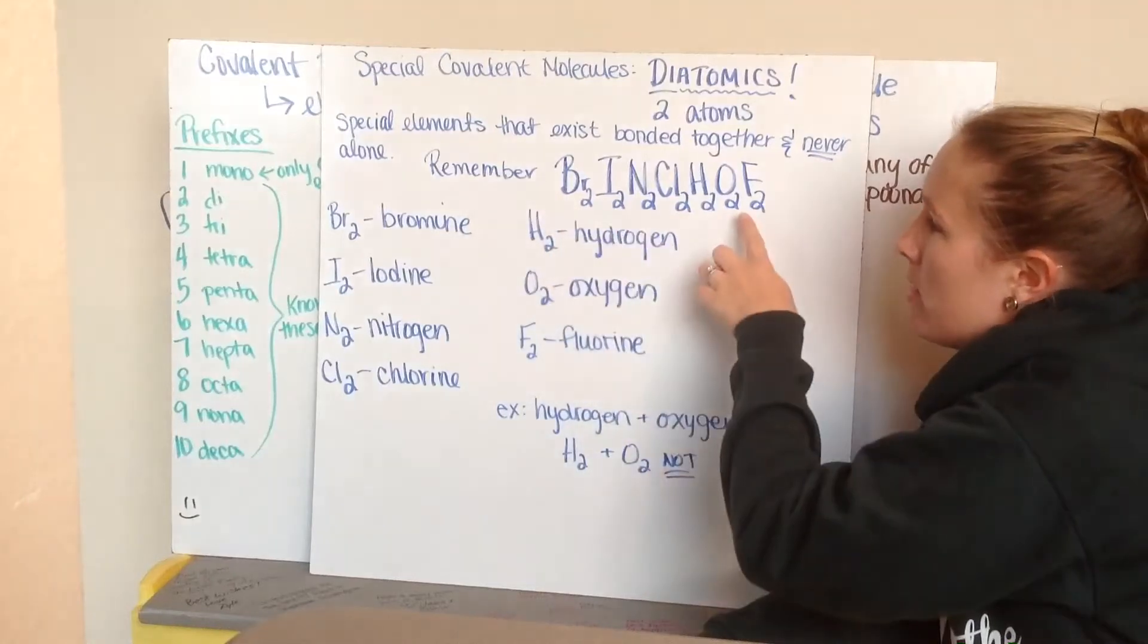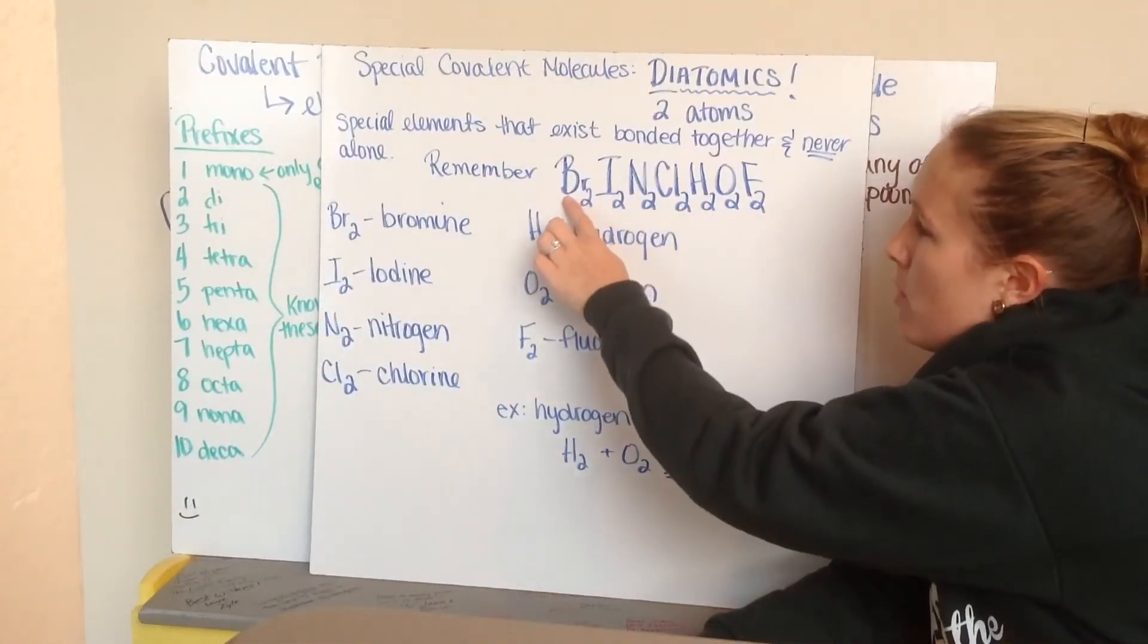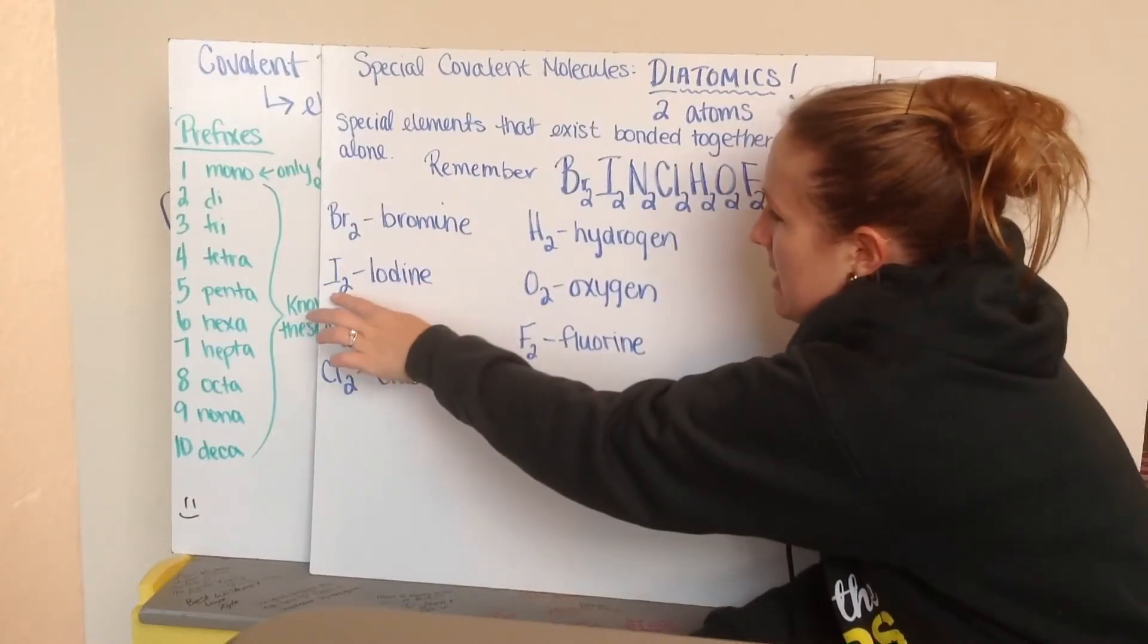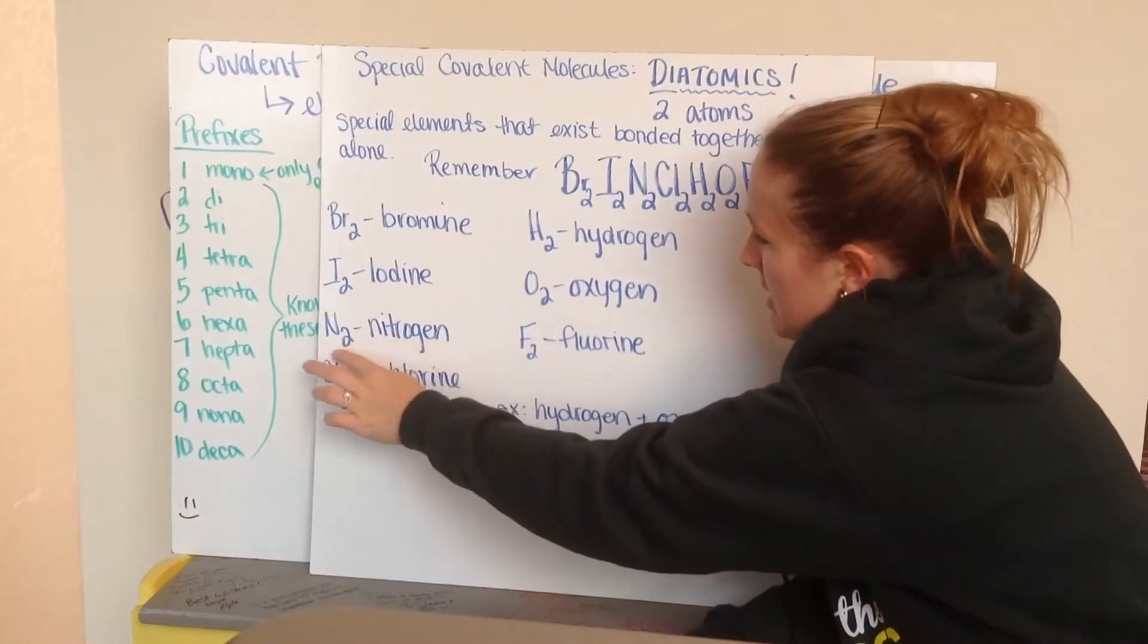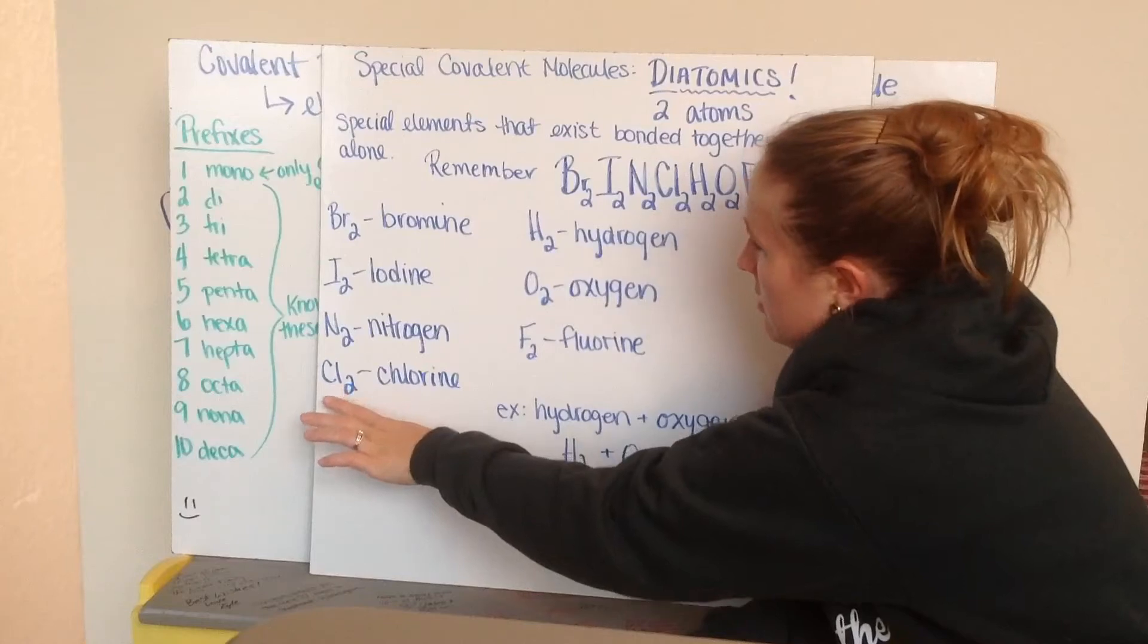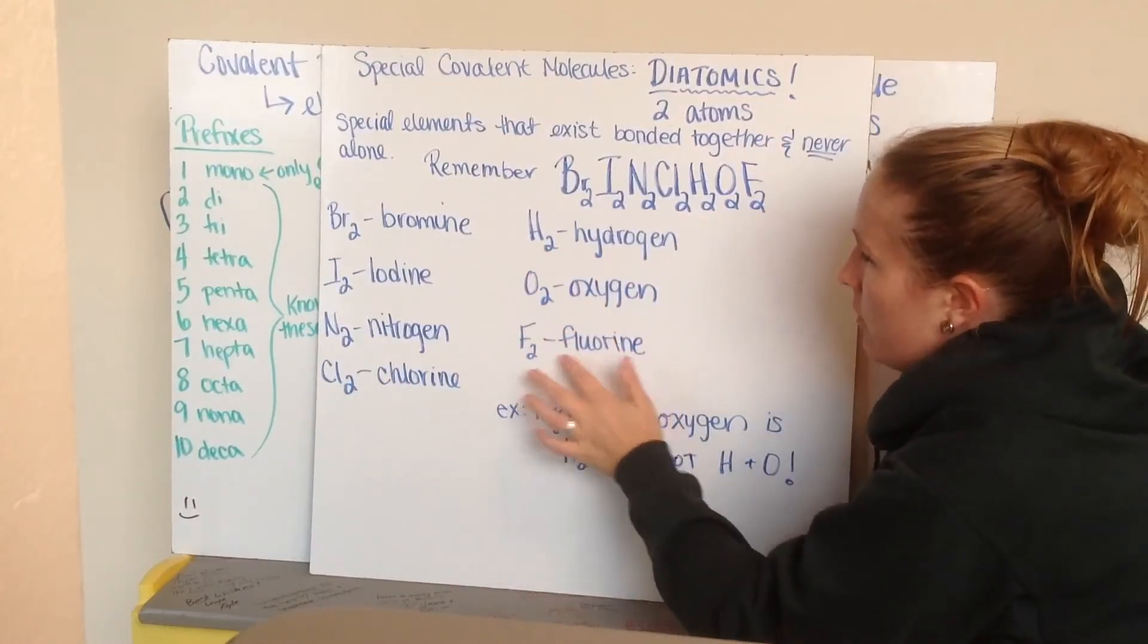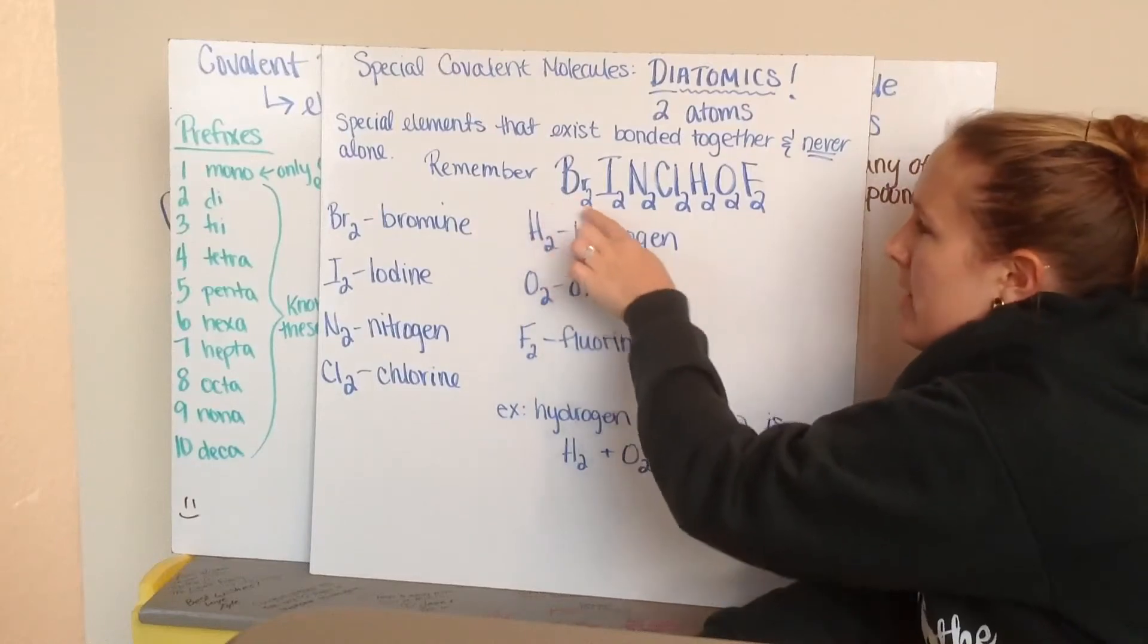So, I remember Brinkelhoff. I have bromine, Br2. It's bromine. Iodine is I2. Nitrogen, N2. Chlorine, Cl2. Hydrogen, H2. Oxygen, O2. And fluorine, F2. When you write it out, you get Brinkelhoff.